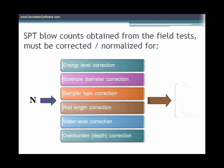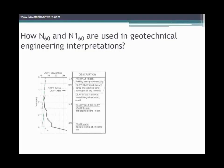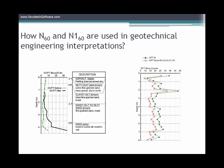SPT raw data should be corrected and normalized to obtain N60. Applying overburden stress correction results in N160, a number widely used in engineering analysis including soil liquefaction, among other correlations. N60 and N160 are also used for confirmation of subsurface layers as recorded during drilling.